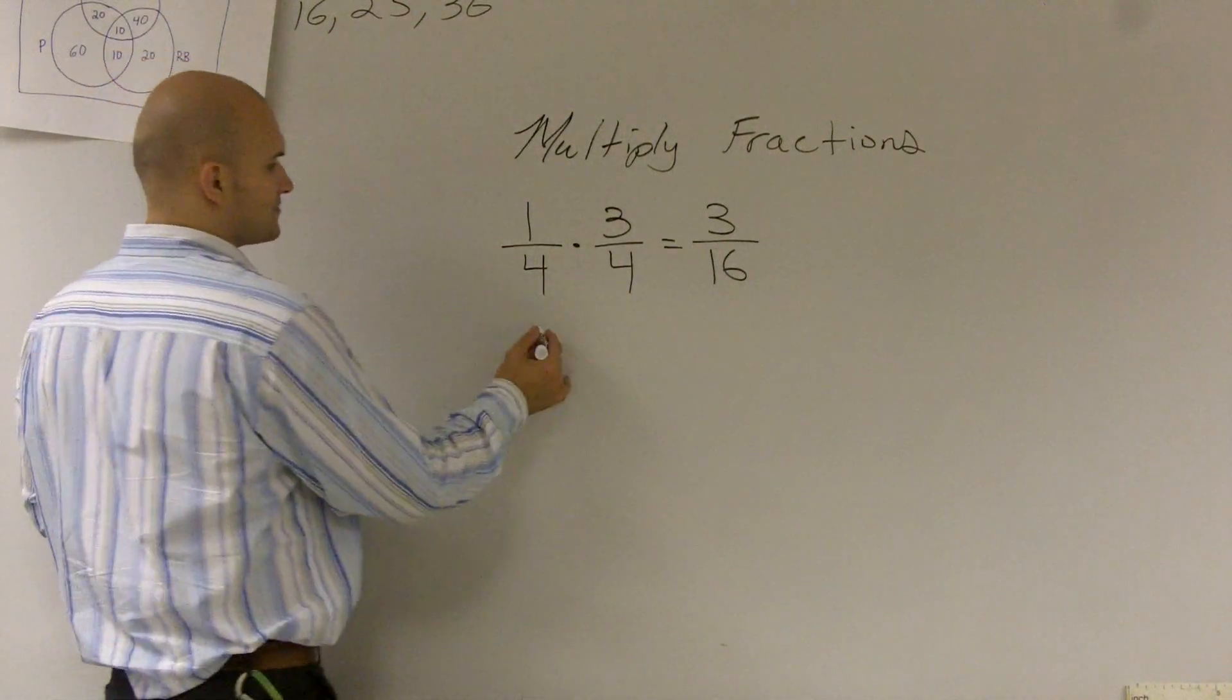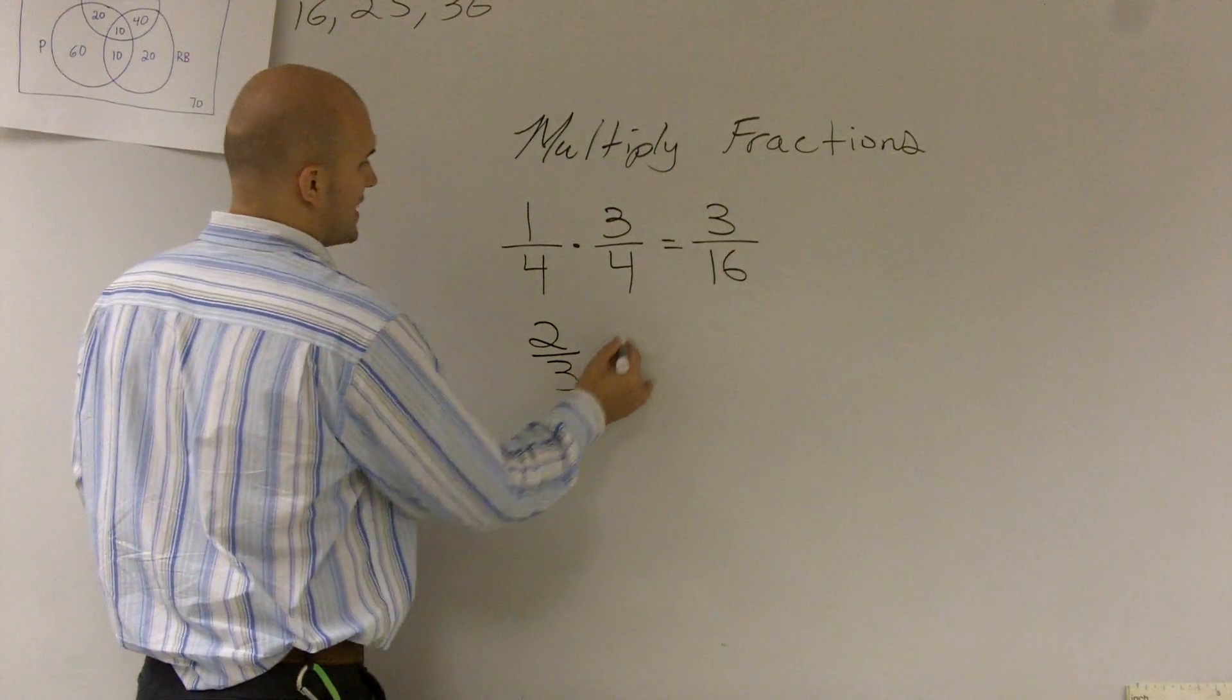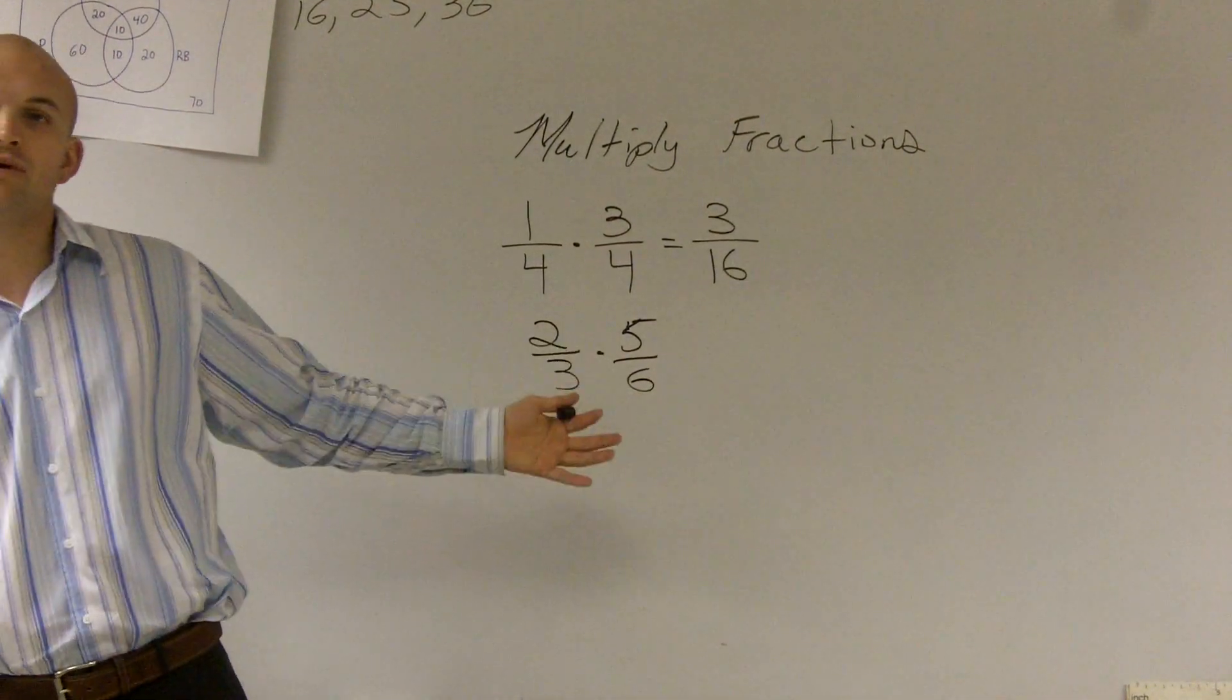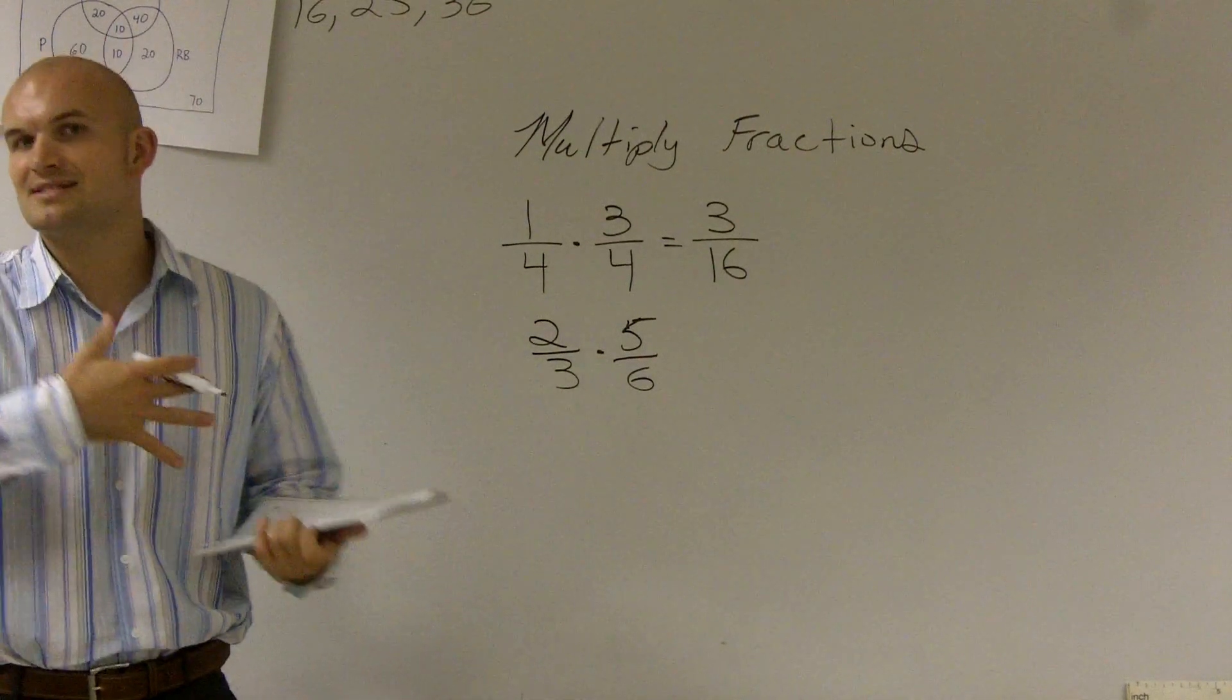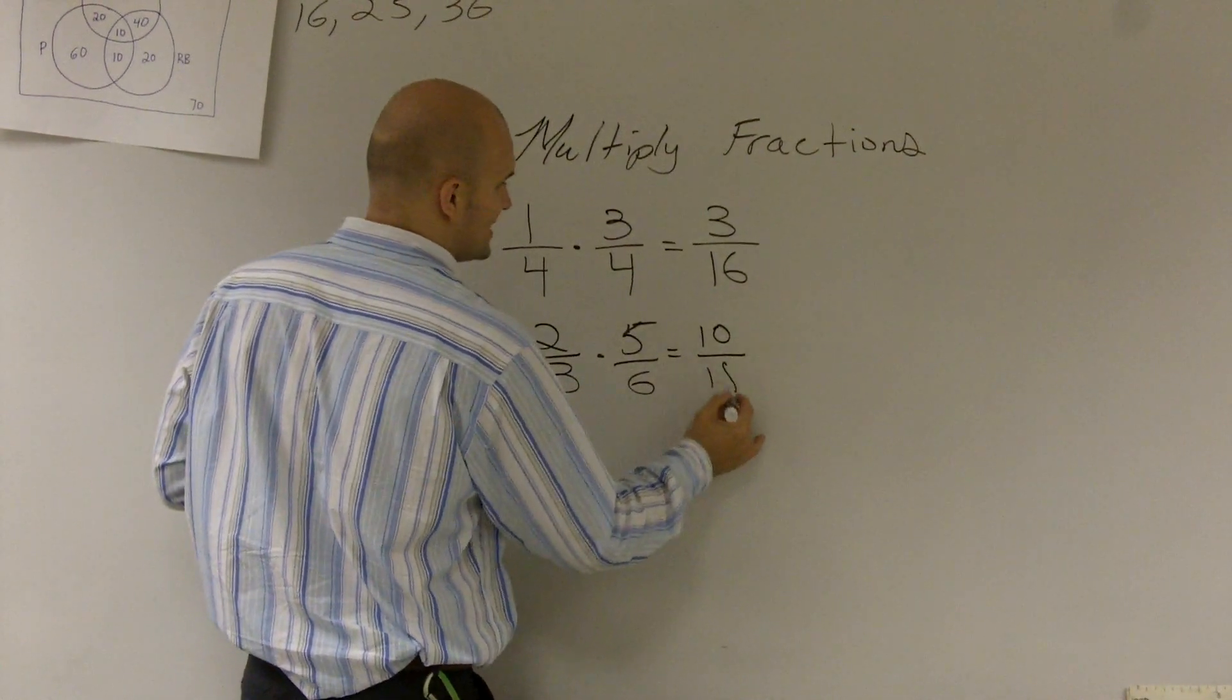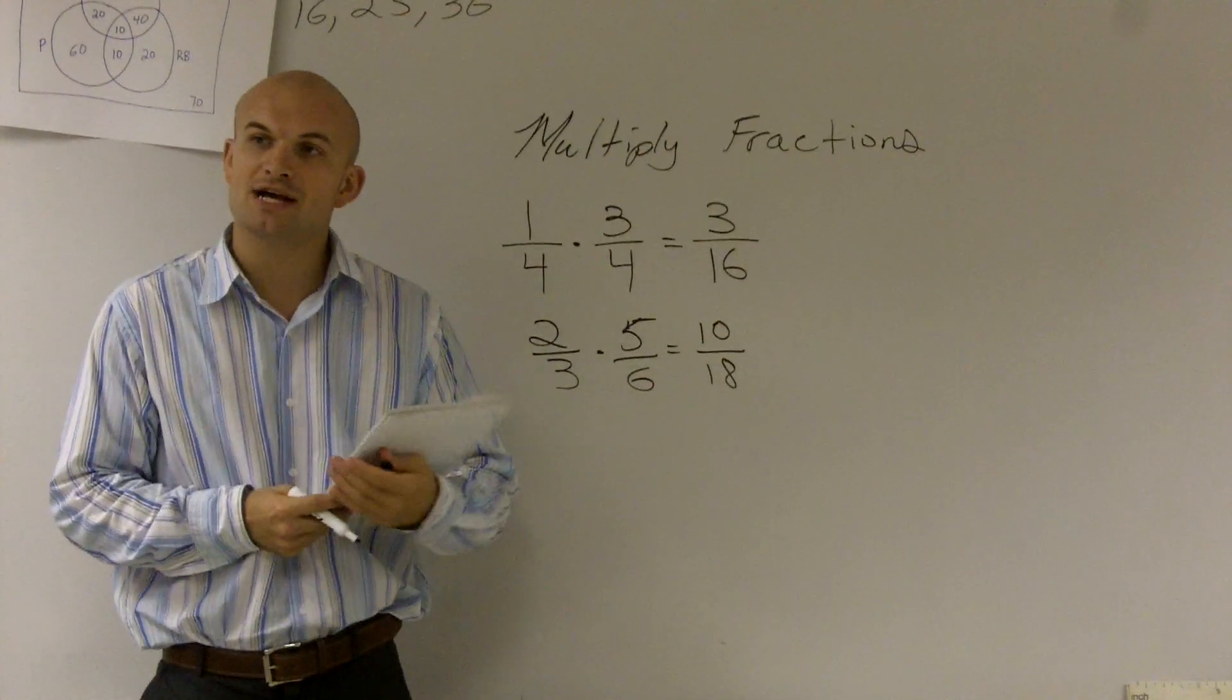Let's look at another example. Here I have 2/3 and 5/6. So here, our denominators are different, but again, since we're multiplying our fractions, it's OK. We still can just multiply across. 2 times 5 gives you 10, 3 times 6 gives you 18. However, here we go over a problem where now we can reduce our fraction.